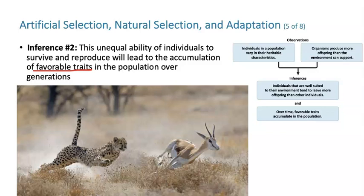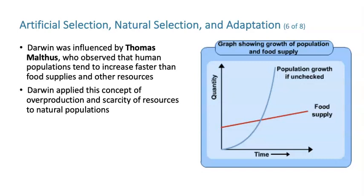One huge influence on Darwin was Thomas Malthus — not a biologist but an economist — who was making observations about humans. He said human populations tend to increase faster than food supplies and other resources, essentially describing exponential growth. Darwin took this idea of overproduction and scarcity of resources and applied it to natural populations.